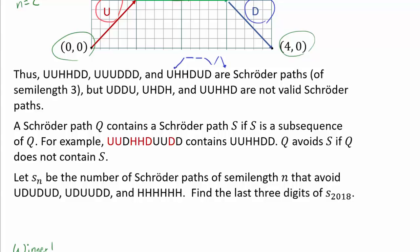But UDDU and UHDH and UUHHD are not valid Schröder paths. Because, for example, UDDU dips below the x-axis. That's not allowed.